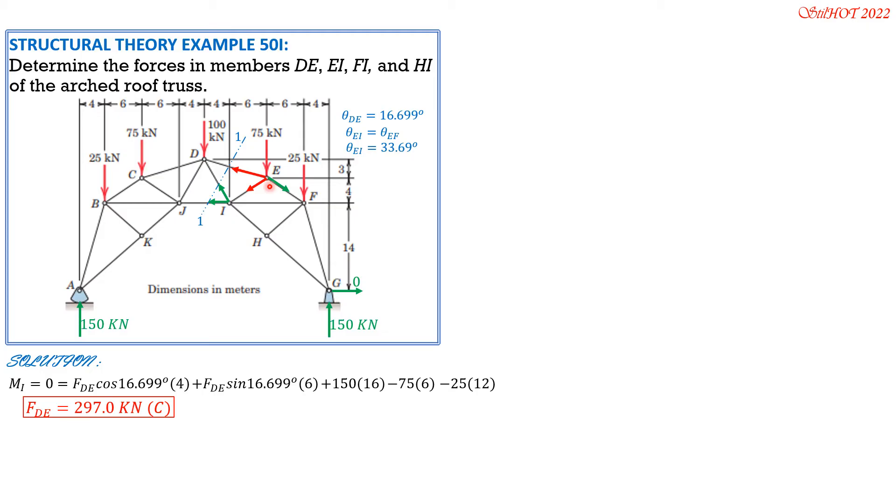So we set the horizontal component of resultant at E to zero. FEF rightward, so this is taken positive: FEF cosine of 33.69 degrees. Then FEI is to the left, so minus FEI cosine of 33.69 degrees also. Then minus FDE, so minus negative 297 because the sign of FDE is negative, cosine of 16.699 degrees. Simplifying: FEF cosine 33.69 degrees minus FEI cosine 33.69 degrees equals negative 284.47. Call that Equation 1.